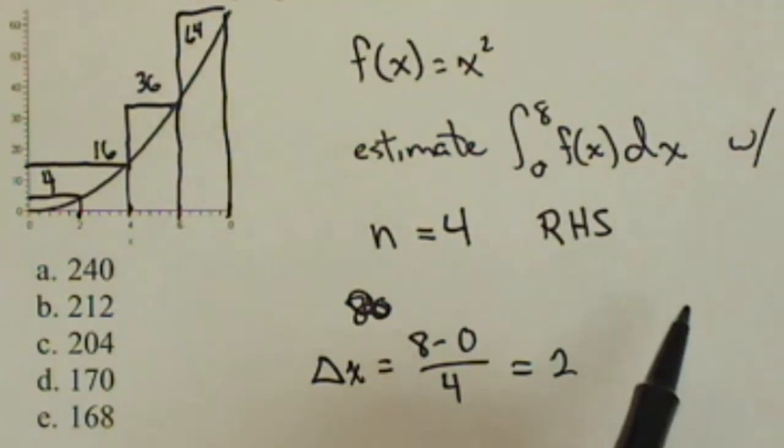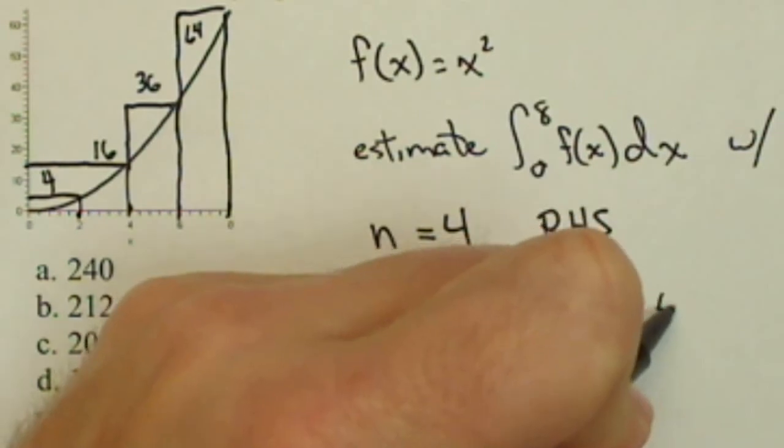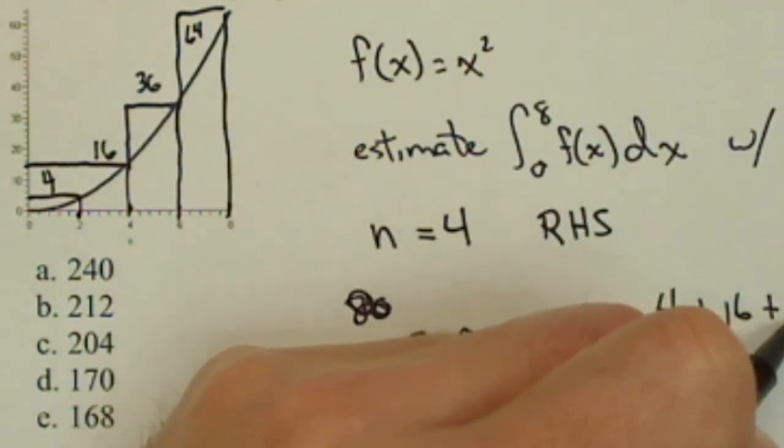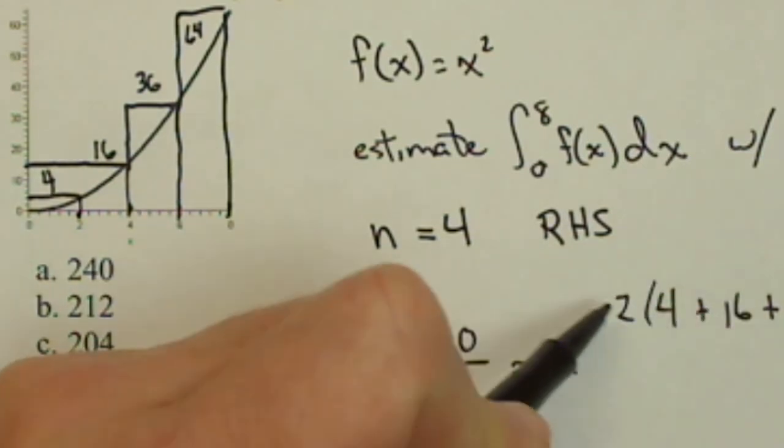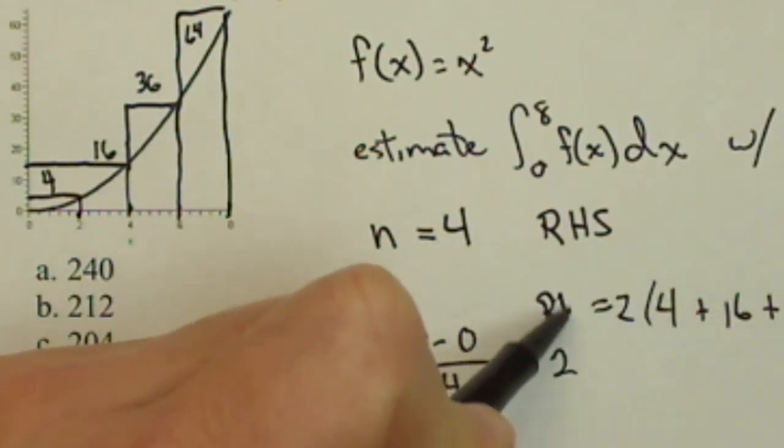So when we add up these heights, we have to remember to multiply them by delta x. So we have 4 plus 16 plus 36 plus 64, all times 2, gives us our right-hand sum.